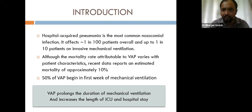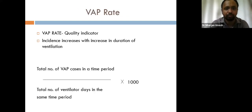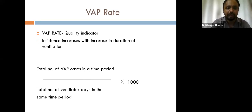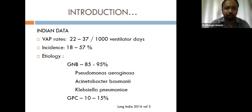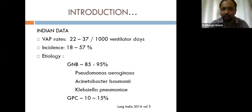VAP prolongs the duration of mechanical ventilation and increases ICU and hospital stay, so it must be addressed. The VAP rate is an important quality indicator of any ICU. It is defined as the total number of VAP cases in a time period divided by the total number of ventilator days in the same time period. Indian data reports a VAP rate of around 22 to 37 per thousand ventilator days, with incidence varying from 18 to 57 percent across different ICUs in India.